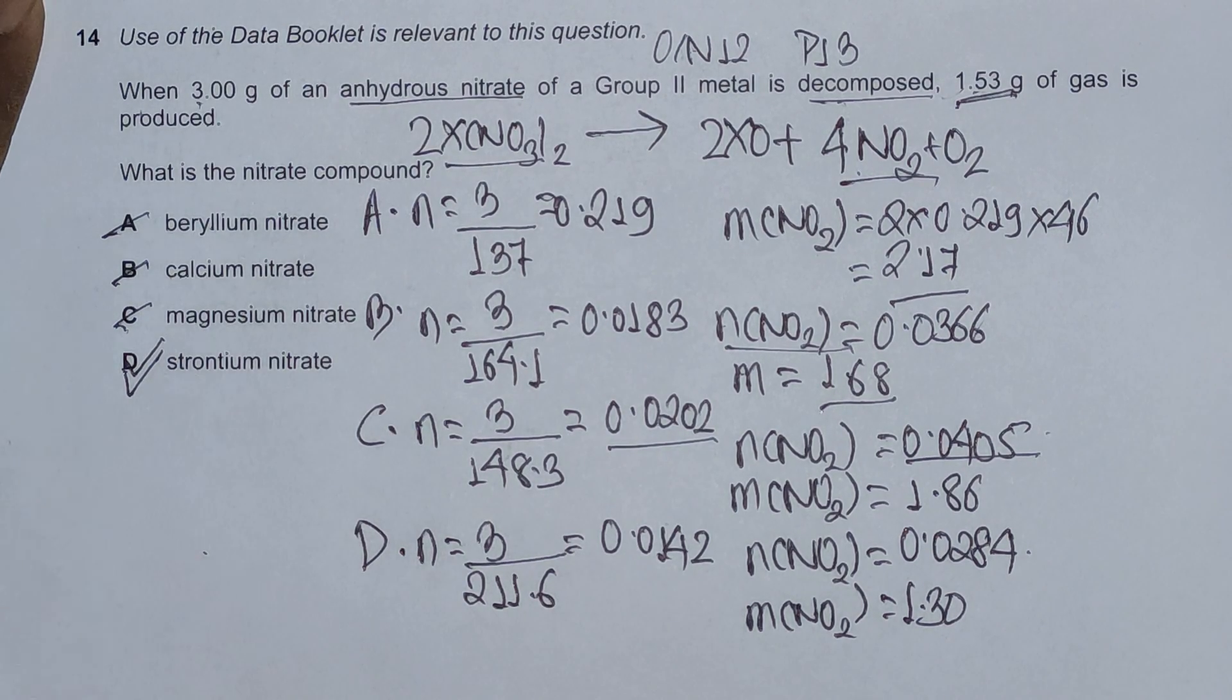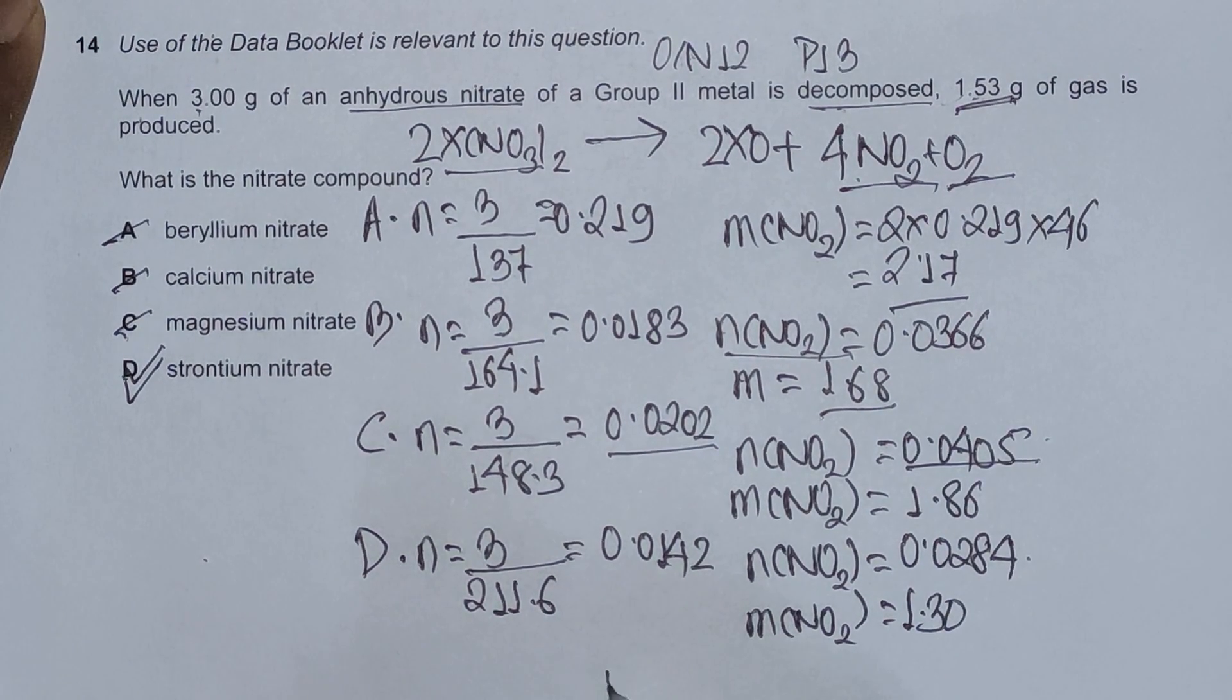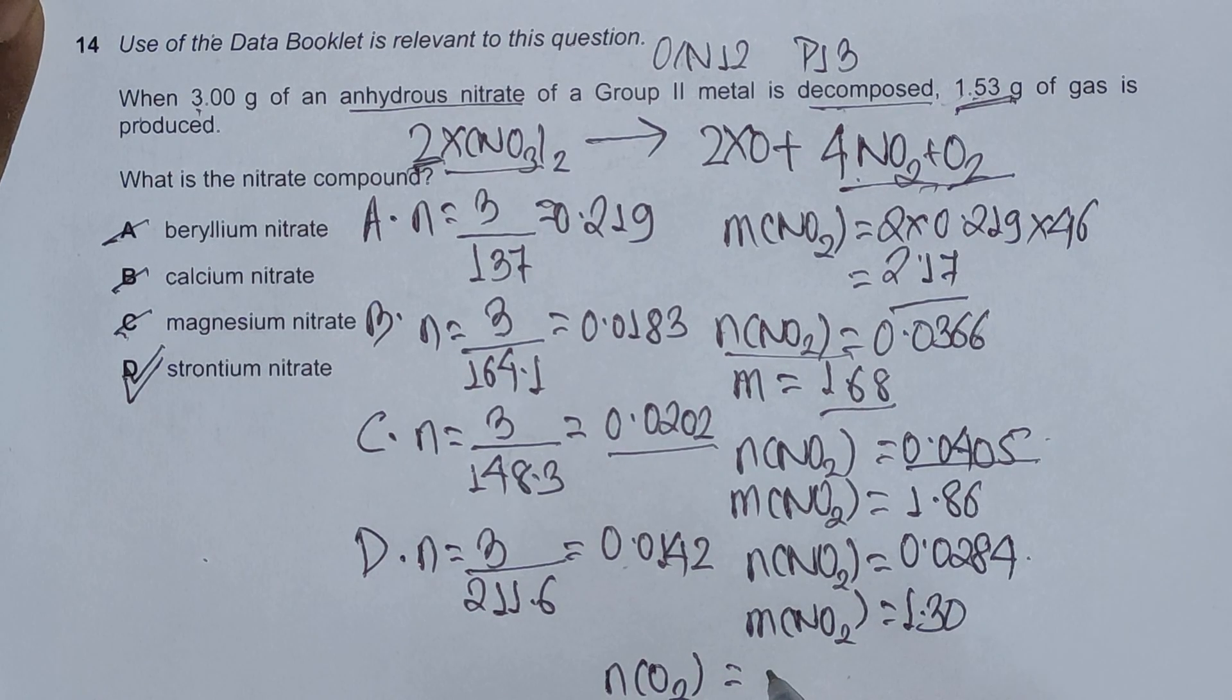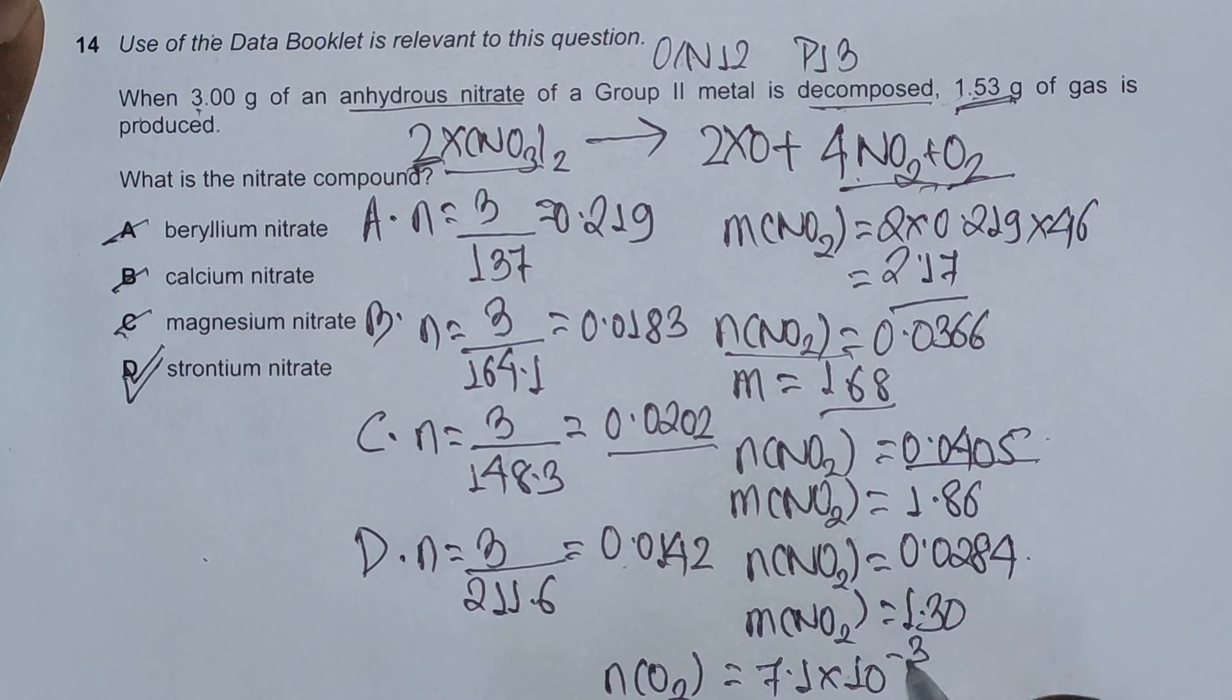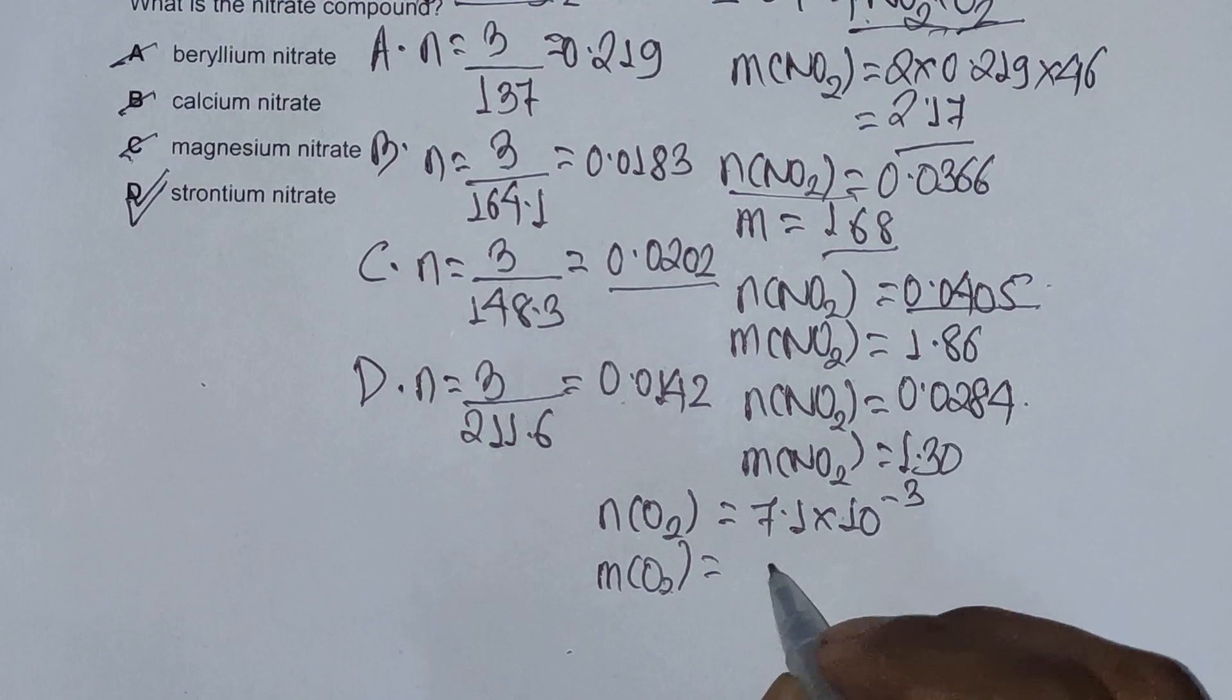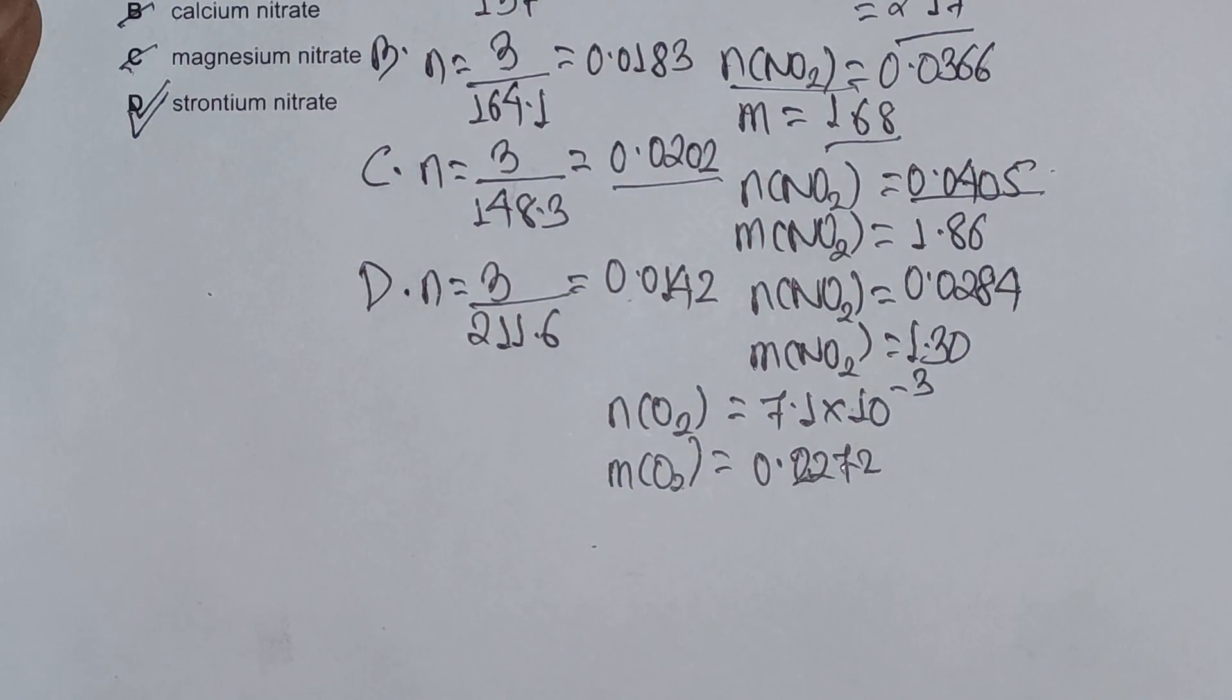Now if we check for mass of oxygen, moles of oxygen is 0.0142 divided by 2 because of the stoichiometric ratios, which amounts to 7.1 times 10 to the minus 3. Again using the same formula, mass of oxygen in this case is 0.2270.